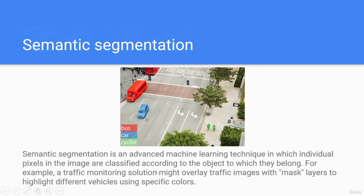Semantic segmentation is an advanced machine learning technique in which individual pixels in the image are classified according to the object to which they belong. For example, a traffic monitoring solution might overlay traffic images with a mask layer to highlight different vehicles using specific colors — the bus defined as red, the car as blue, and the cyclist as green.